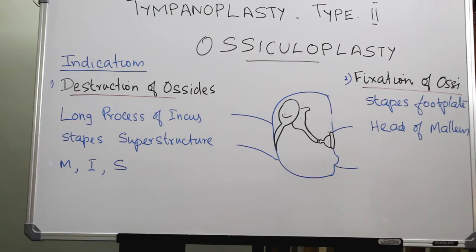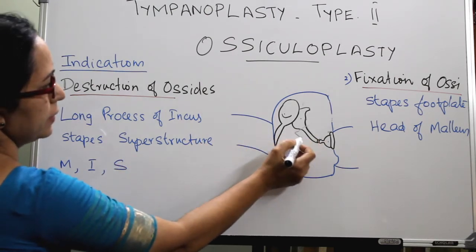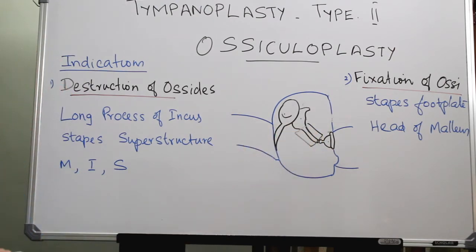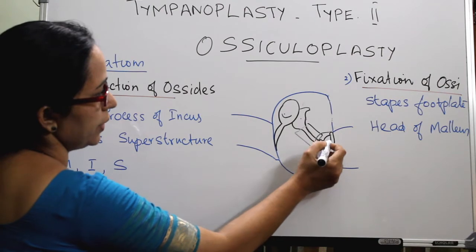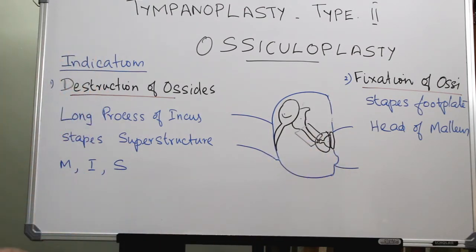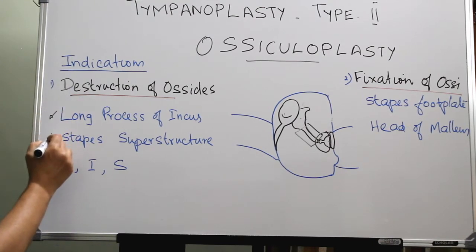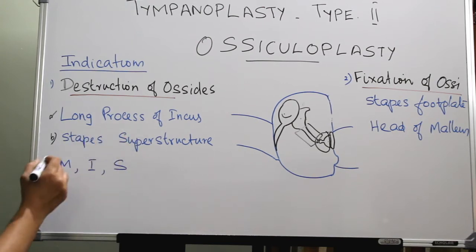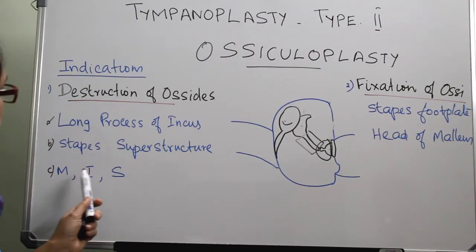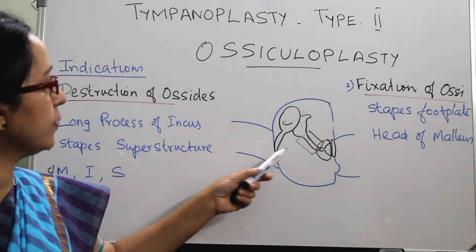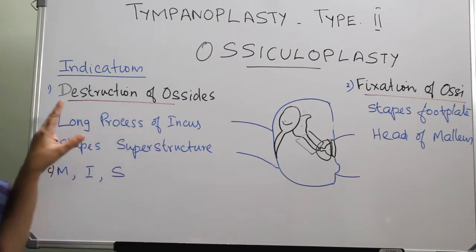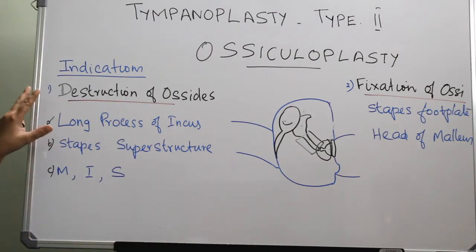Of the destruction of ossicle, the long process of incus is most commonly affected. Next comes the stapes superstructure — only a mobile footplate will be present. The third variety is loss of the stapes superstructure, where the malleus, incus, and also the stapes superstructure are absent, so that only the handle of malleus and a mobile footplate will be present.